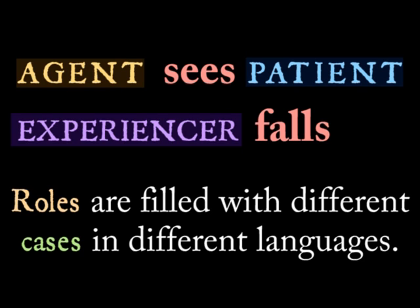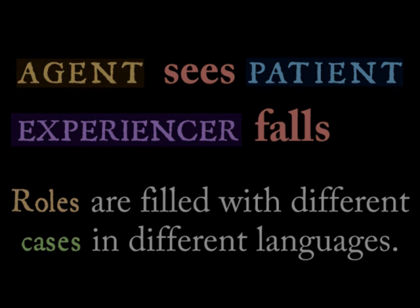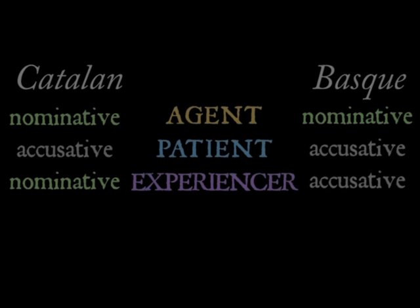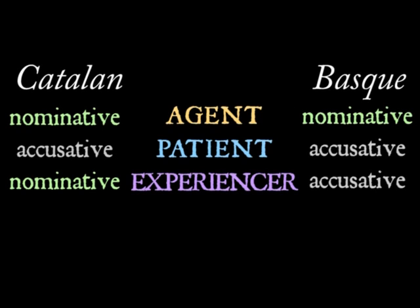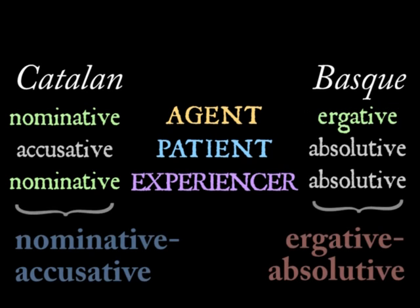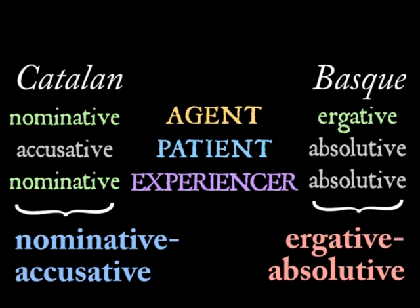Of course there are names for these two alignments. The first gets called nominative-accusative and the second is ergative-absolutive. And these aren't the only ways languages have of handling alignment either.